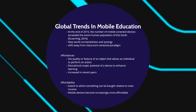This shift has been made smoother by the global integration and expansion of mobile technologies. An increase in global trends can be attributed in part to a combination of the concepts of affordability and affordances. Affordances is the quality or feature of an object that allows an individual to perform an action — through an educational scope, it is the potential of a device to enhance the learning of an individual. Affordability is the extent to which something can be bought relative to one's income. A worldwide decrease in the cost of mobile devices and an increase in affordances has made them more affordable and more useful in both developed and developing nations, increasing demand substantially.